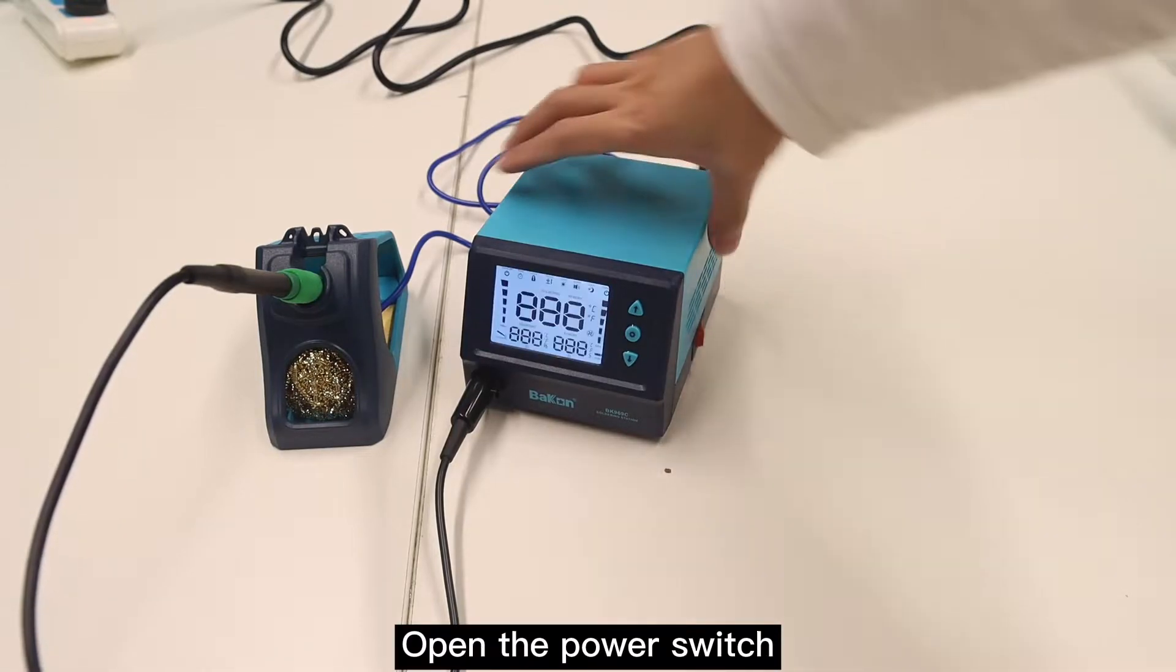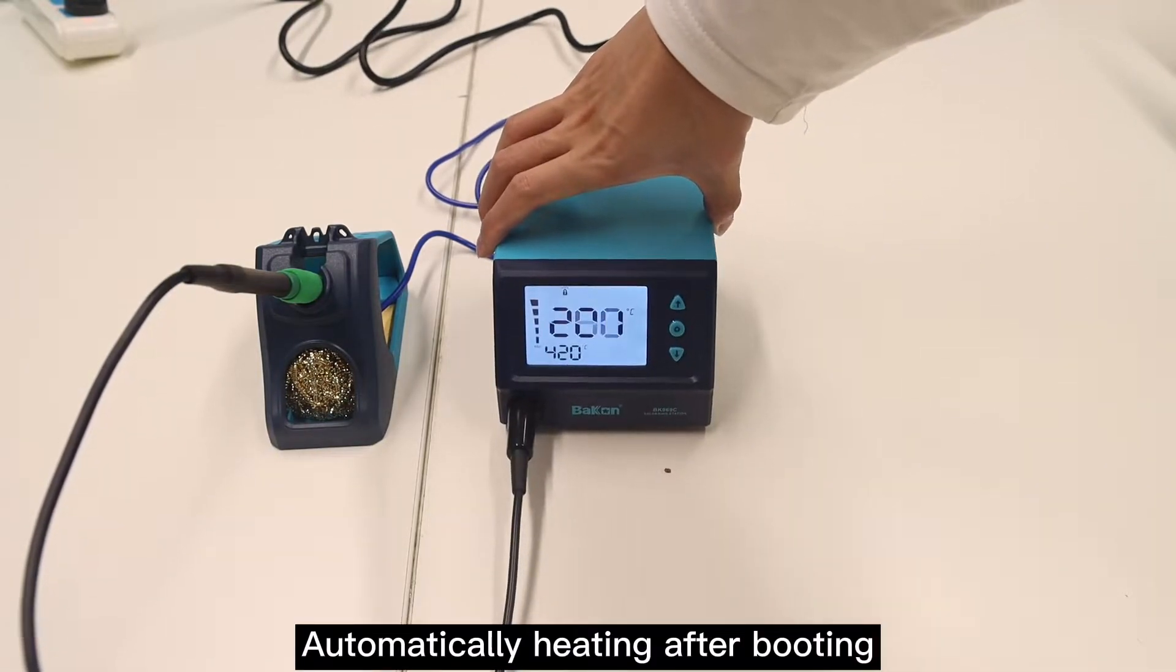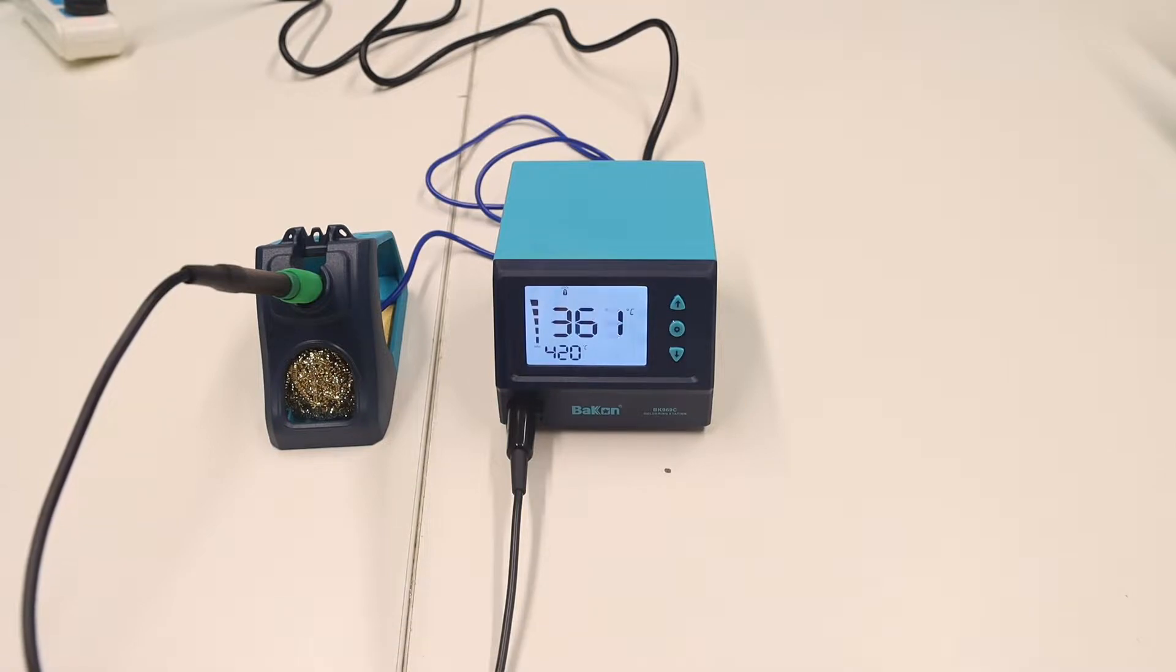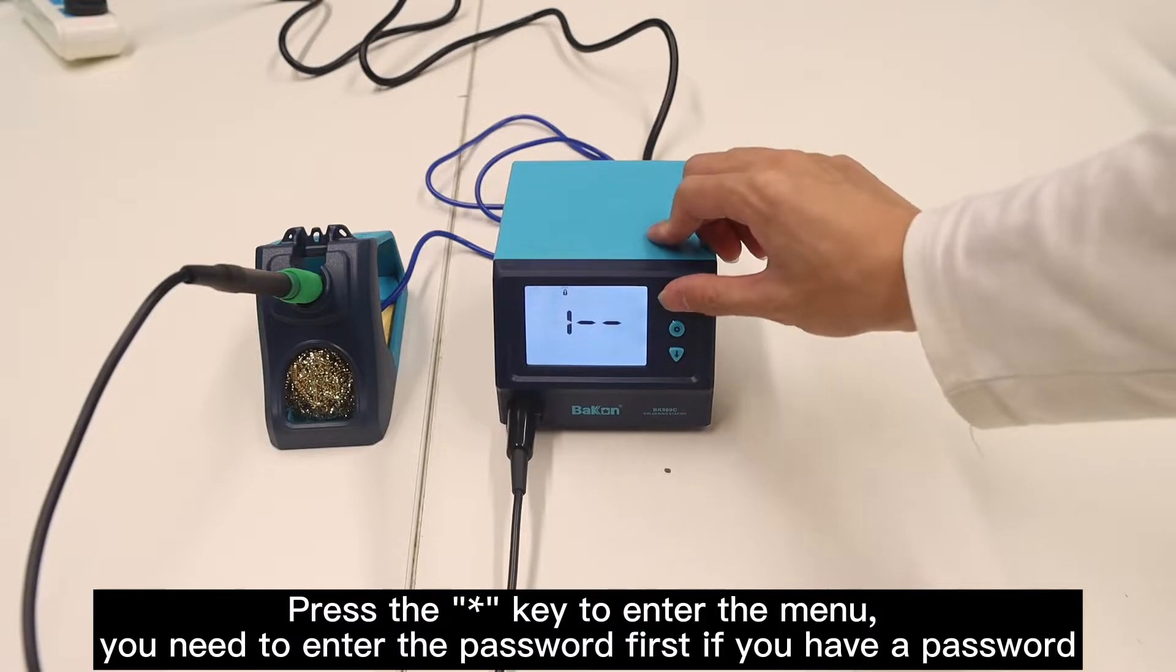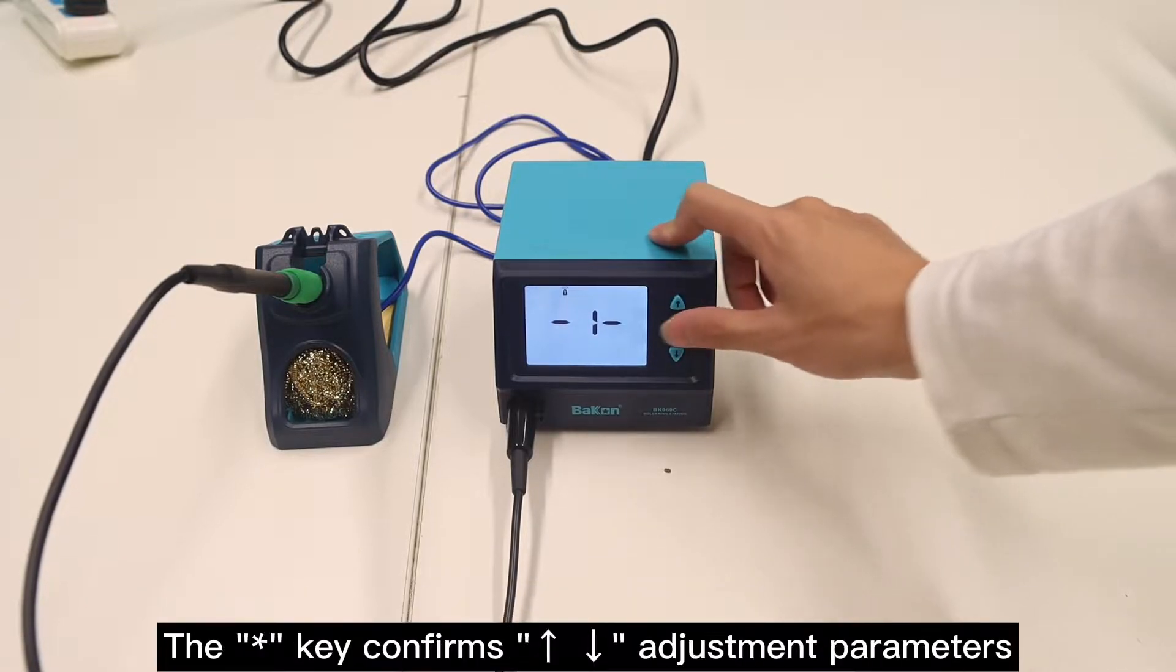Open the power switch. The unit automatically heats after booting. Press the key to enter the menu. You need to enter the password first if you have a password. The key confirms adjustment parameters.